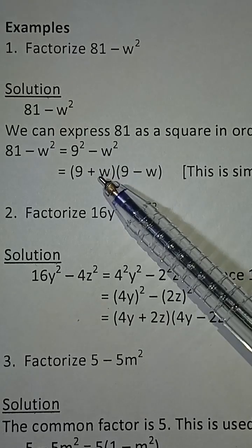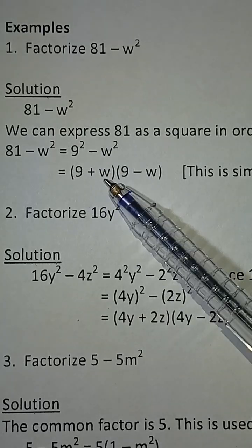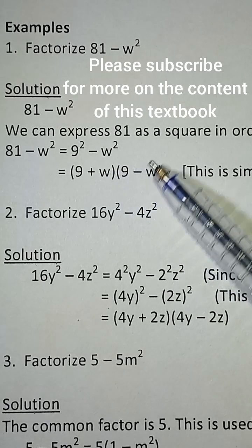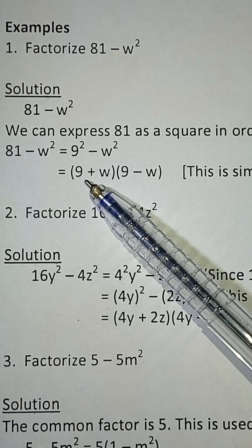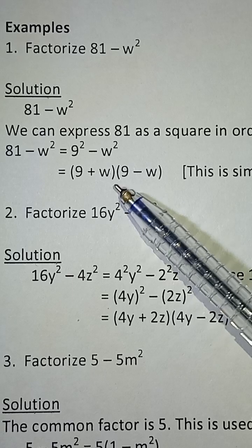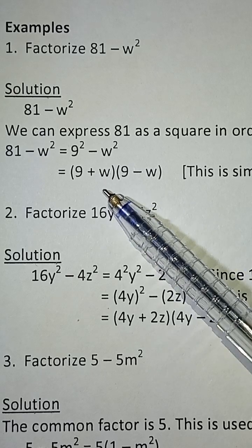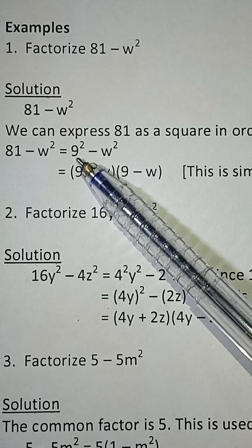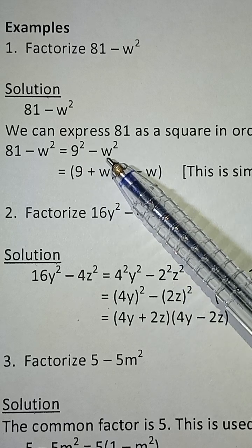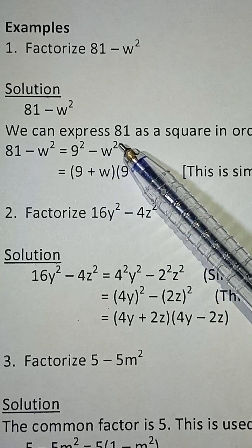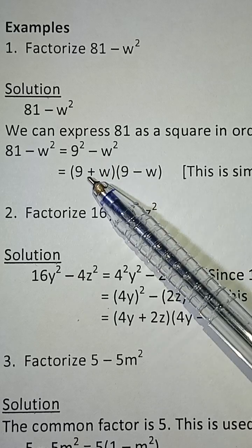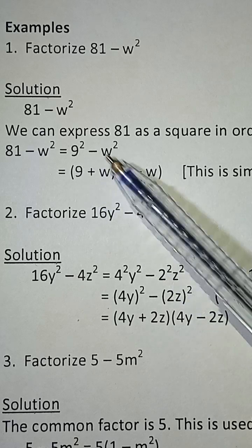take the two numbers, add them together and close in a bracket. Then take the two numbers, subtract them and enclose in a bracket. This is a simple trick for factoring difference of two squares. When you have a number squared minus a letter or another number squared, add the two numbers and close in a bracket, subtract the two numbers and enclose in a bracket.